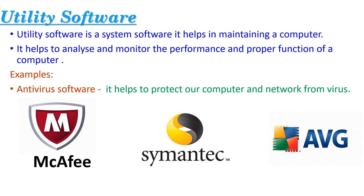Utility software is a system software. It helps in maintaining a computer by analyzing and monitoring its performance and proper functions. Examples of utility software include antivirus software, which helps protect our computer and network from viruses. A virus is a program that causes damage to data and files on a system. Examples of antivirus software are McAfee, Symantec and AVG.